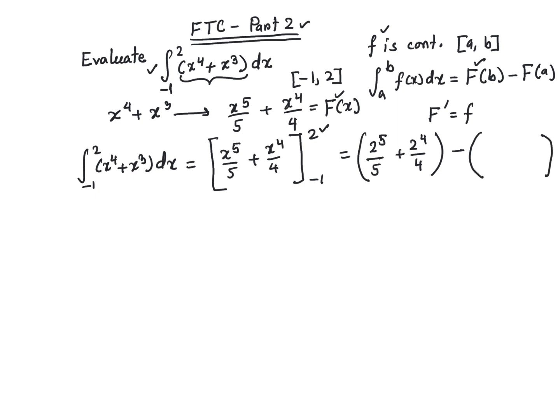otherwise you'll make a mistake probably. It's going to be (-1)^5/5 + (-1)^4/4.